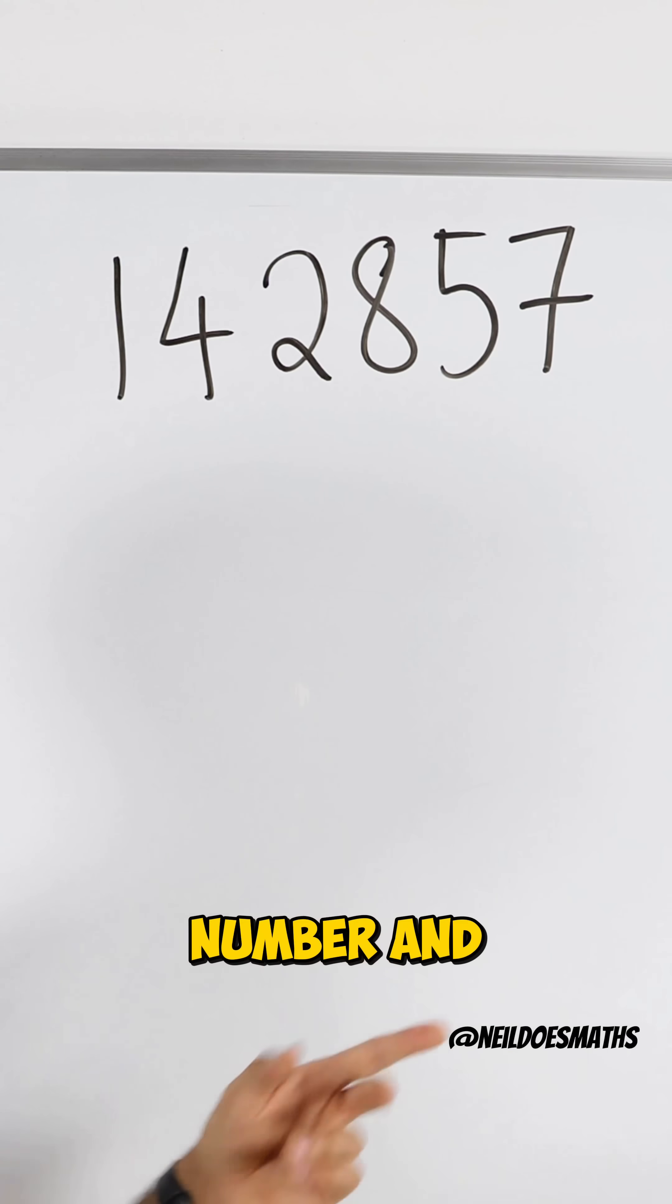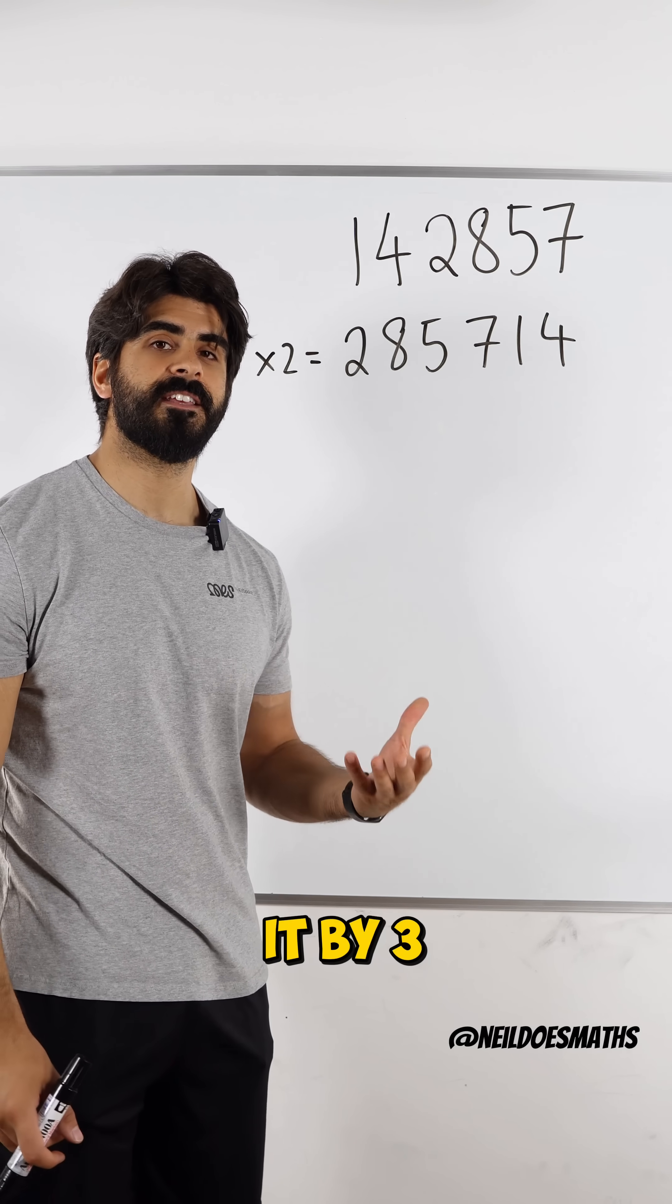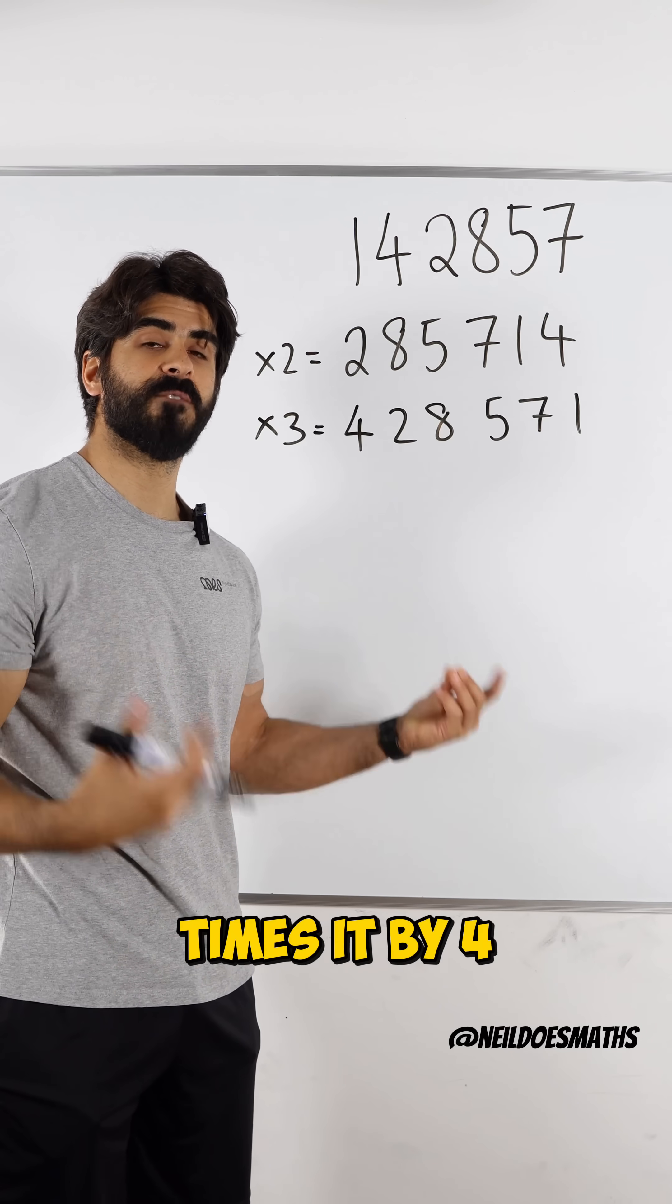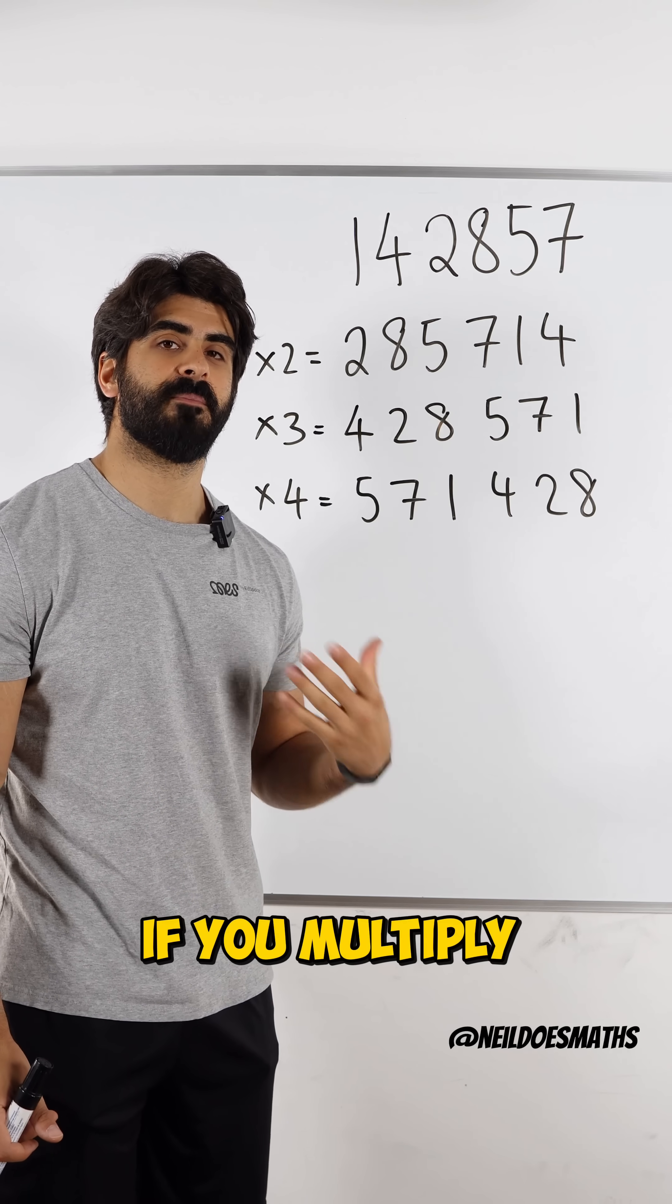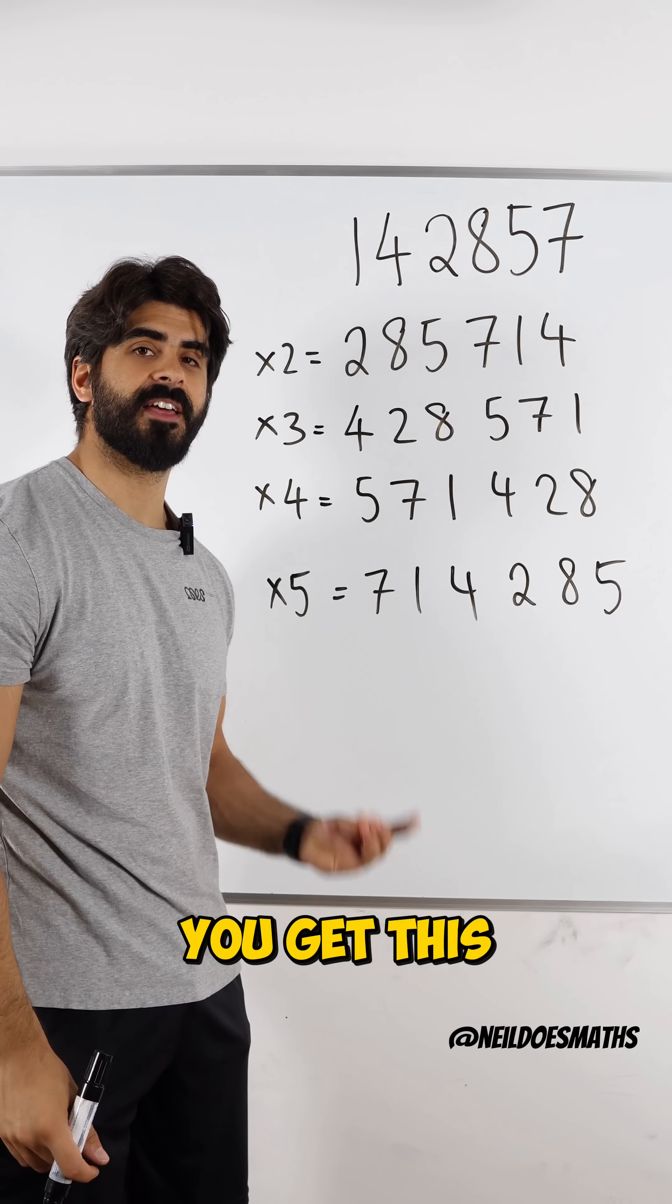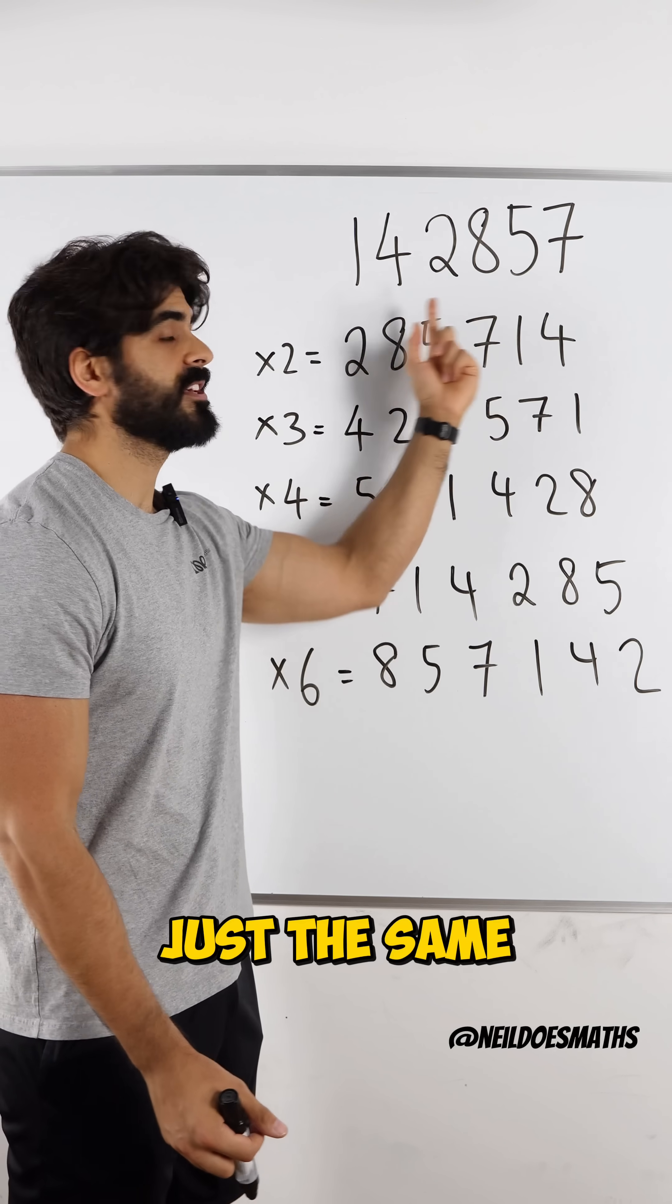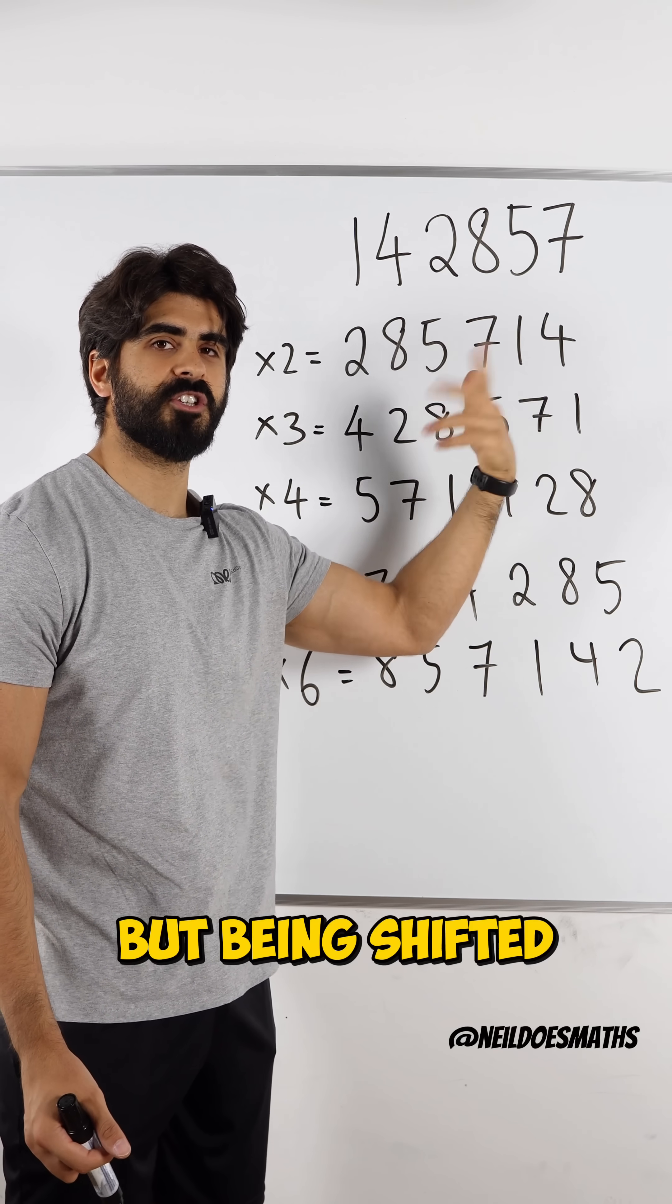If you take this six-digit number and multiply it by 2, you get this. And then if you times it by 3, you get this. And if you times it by 4, you get this. If you multiply it by 5, you get this. And finally, if you multiply it by 6, you get this. And what you may notice with these numbers is that it is just the same numbers, but being shifted around.